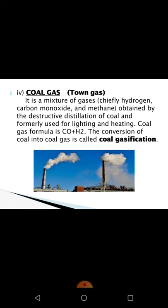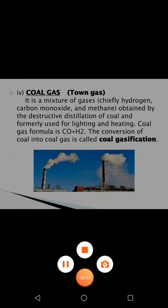To summarize, destructive distillation of coal means heating coal in the absence of air, and it produces four by-products: coke, coal tar, ammoniacal liquor and coal gas. Coke is used as a reducing agent for extraction of metals; coal tar is a mixture of organic compounds with medical and industrial uses; ammoniacal liquor is a concentrated solution of ammonia used to make fertilizers; and coal gas (town gas) is used as a fuel. Thank you, hope you understand. Bye.